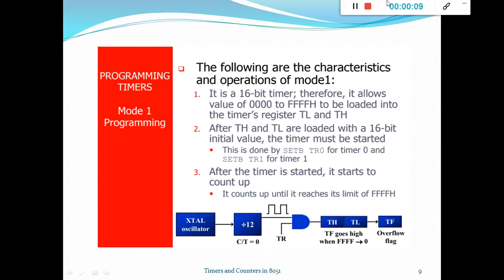As you know, there are 4 types of modes: mode 0, mode 1, mode 2, and mode 3. We select these modes using the M1 and M0 bits of the TMOD register. When you put 00 in M1 and M0 you select mode 0; 01 selects mode 1; 10 selects mode 2; and 11 selects mode 3.